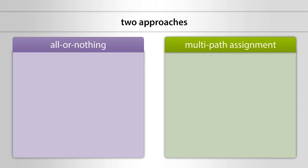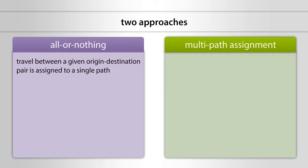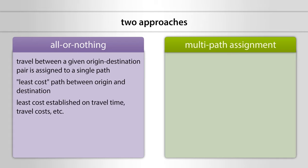In the all-or-nothing approach, all travel between a given origin-destination pair is assigned to a single path — that is the least cost path between that origin and destination. The least cost may be established based on travel time, travel costs, etc.